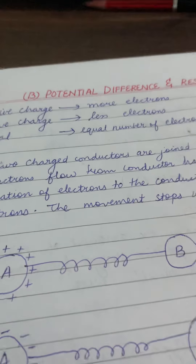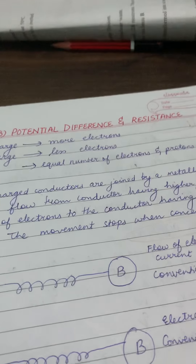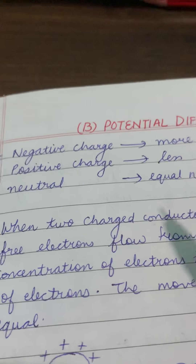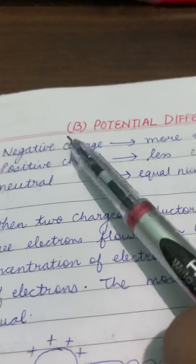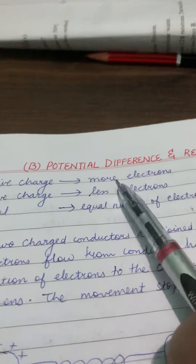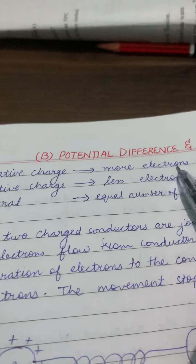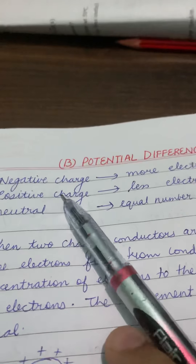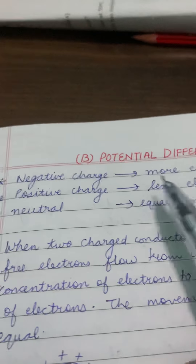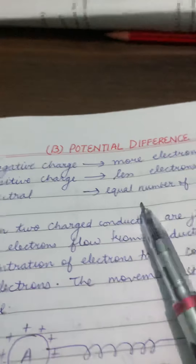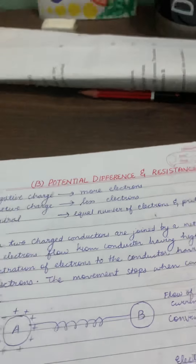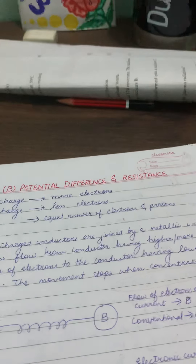Now let us start a B exercise on potential difference and resistance. Before we start, you should know some important points. If a conductor has negative charge, it means it has more electrons because electrons carry negative charge. If it is carrying positive charge, it means it has fewer electrons. If it is neutral, it means equal number of negative and positive charges — that is, equal number of electrons and protons.